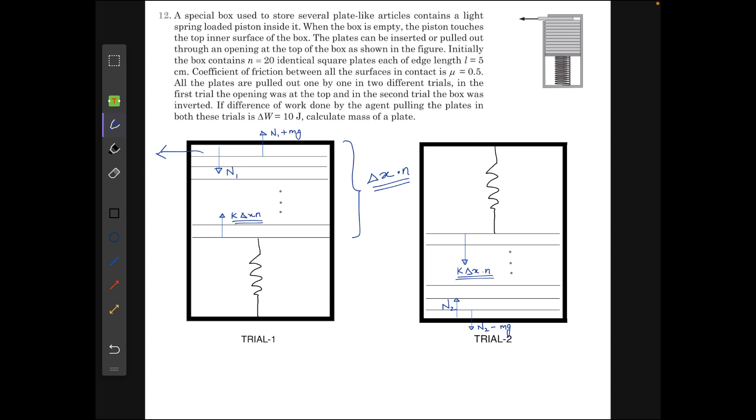In trial 1, I assume that the normal force between the top plate and the top surface of the box is n1, and the force between the lowest plate and the spring is k delta x times n. Here I assume that delta x is the width of each plate and as there are n plates, the extension in the spring would be delta x times n. So it is k delta x times n.